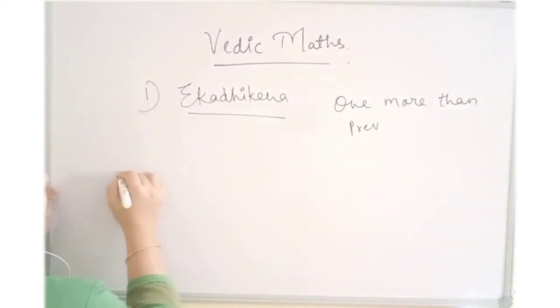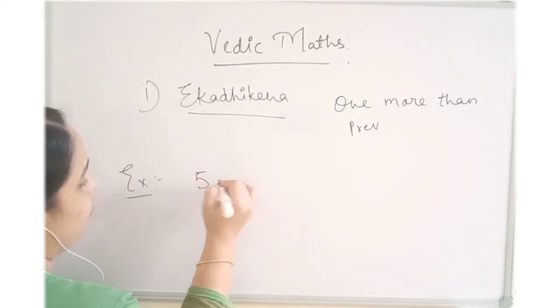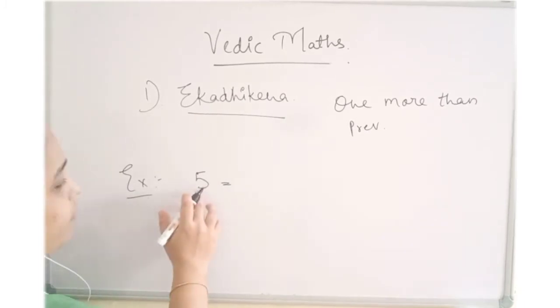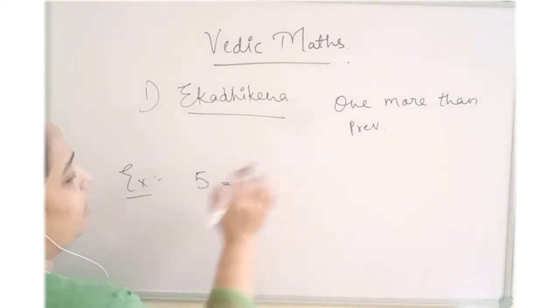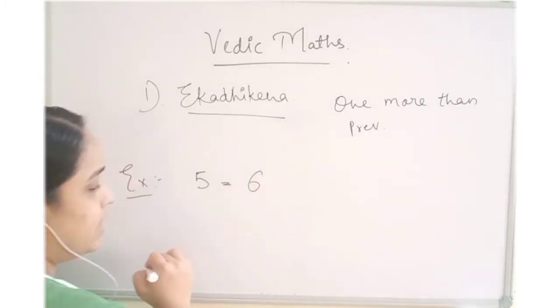So for example, if we understand 5, what is the Ikadi Kena of 5? It will be one more than this previous number which we have. Ikadi Kena of 5 will be 6.